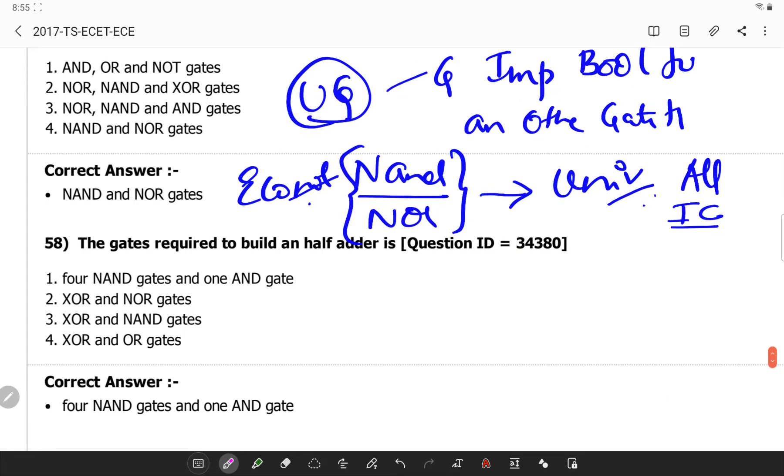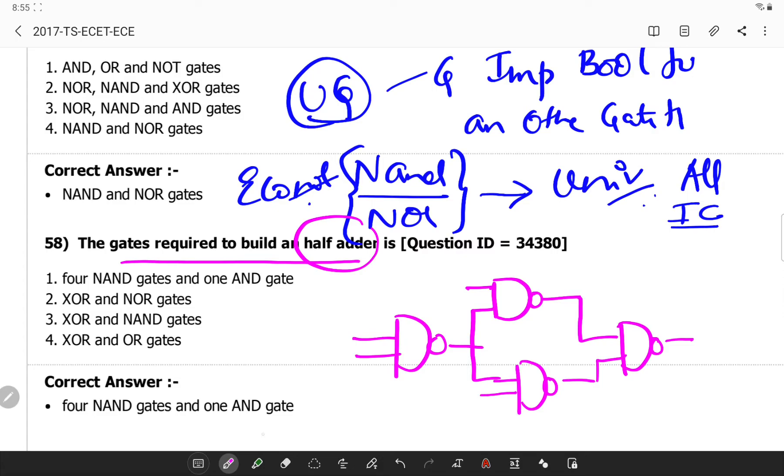Next, the gates required to build a half adder. Remember how the circuit of a half adder looks. So this is the simplest notation of implementing a half adder. Remember this, so this is your carry expression.